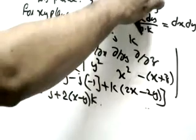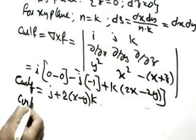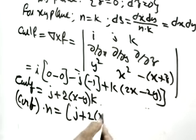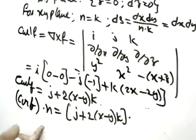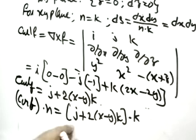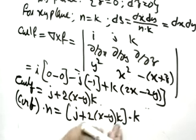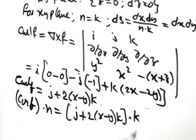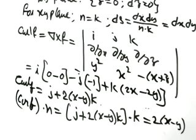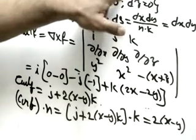Now find curl F dot n. Since n equals k, we take the dot product: curl F dot k means we only take the k-coefficient. The k-coefficient of curl F is 2(x − y), and k dot k equals 1. So curl F dot n equals 2(x − y).